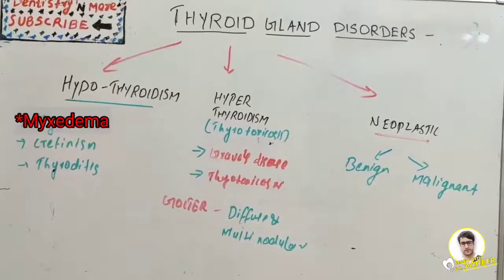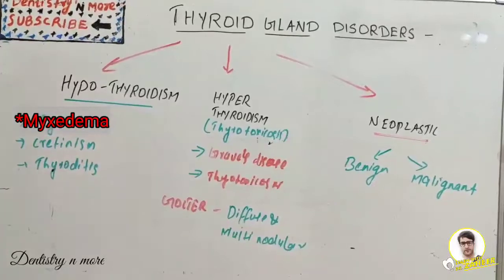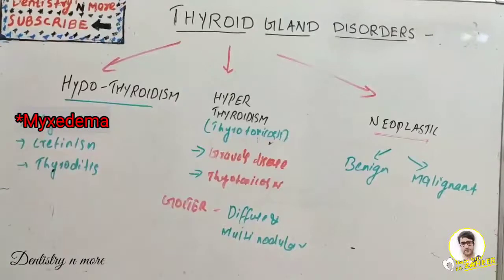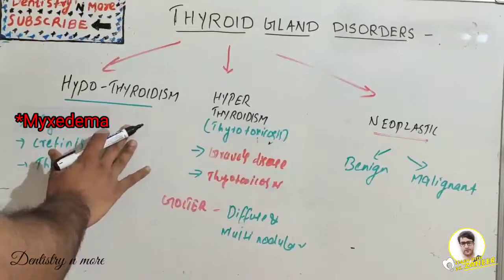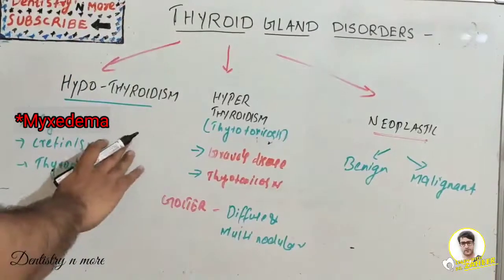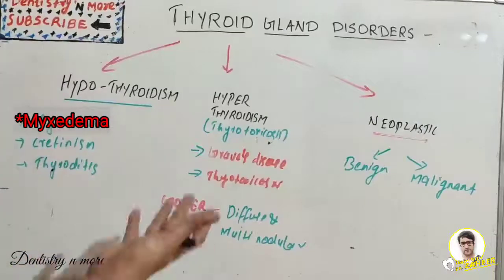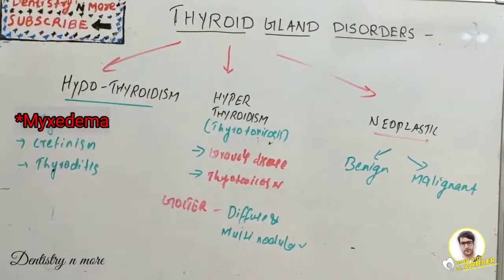Hello everyone, welcome back to another session in Dentistry and More. We have a topic from physiology: thyroid gland disorders. There are basically three problems: the under-functioning of the thyroid gland, that is hypothyroidism; then the over-functioning, that is hyperthyroidism; then the neoplastic changes.